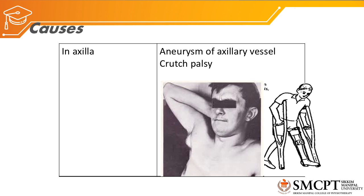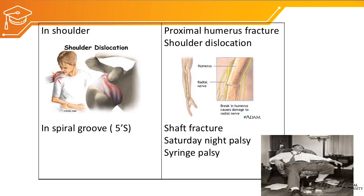The common causes of radial nerve injury at the axillary level are aneurysm of the axillary vessel and crutch palsy, where the crutch compresses the radial nerve or posterior cord of the brachial plexus. At the shoulder, the most common causes are proximal humerus fracture and shoulder dislocation. At the spiral groove, causes include shaft fracture, Saturday night palsy, or syringe palsy.